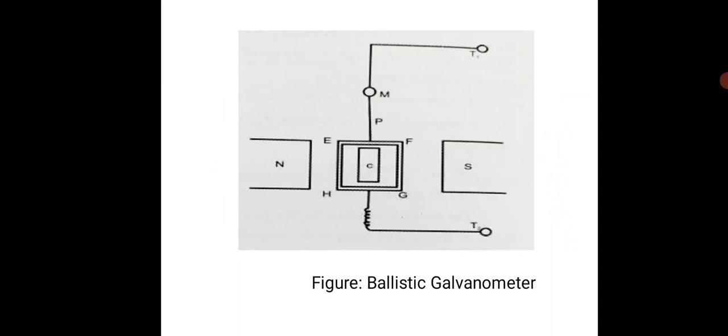It consists of a rectangular coil EFGH of insulated wire placed in a non-conducting frame, and it is suspended between the north and south poles of a permanent magnet using a phosphor bronze wire.